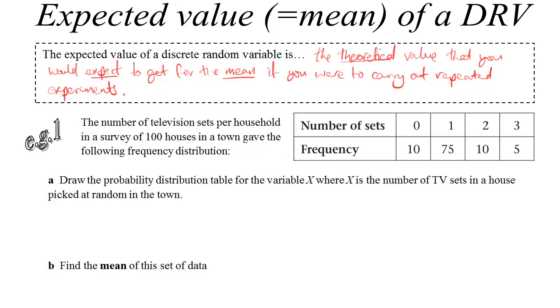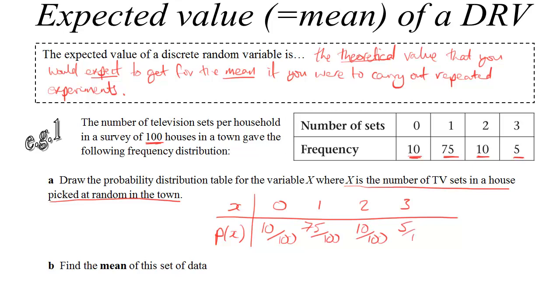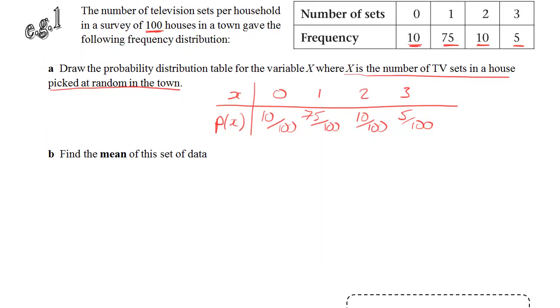The point of this first example is to illustrate where we get the formula for the expected value from. We've got a survey of 100 houses and how many TV sets they had in each. We want to find the probability distribution. So if you were then to pick a house at random, what's the probability that it would have a certain number of TV sets? You'd expect 10 out of 100 houses having no TV sets from the data. Looking at houses with one TV set, you'd expect the probability to be 75 out of 100. That's the most likely outcome and so on. You can see how we get those probabilities by dividing the frequency by the total frequency.